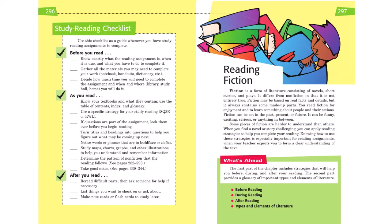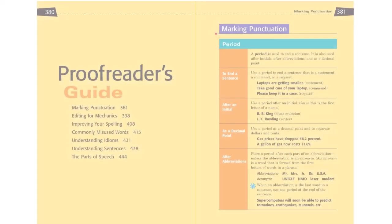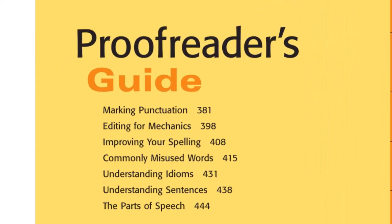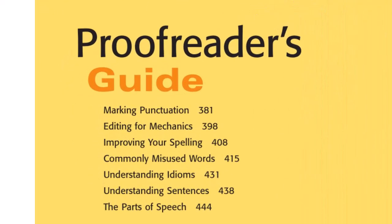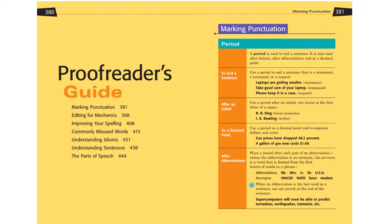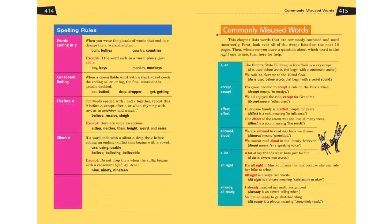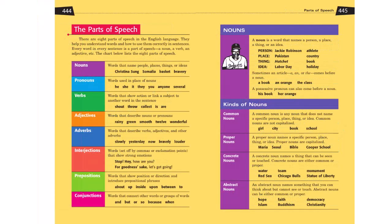The next chapter focuses on reading fiction. Now let's take a look at the proofreader's guide. It includes rules and examples for punctuation, mechanics, spelling, usage, idioms, sentences, and the parts of speech. This first page focuses on the rules for periods. The next two pages focus on question marks, exclamation points, and commas. Here we have a set of spelling rules and the beginning of a section on commonly misused words. You'll find lots of support for the parts of speech, such as nouns.